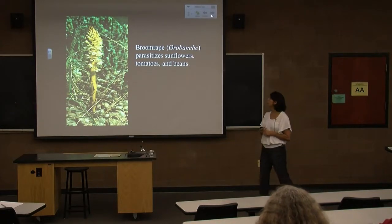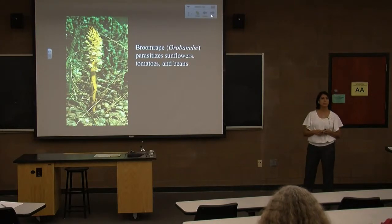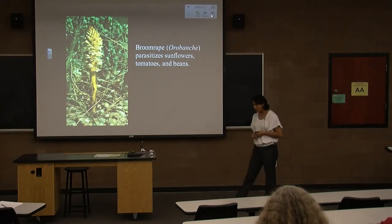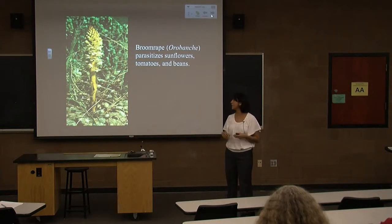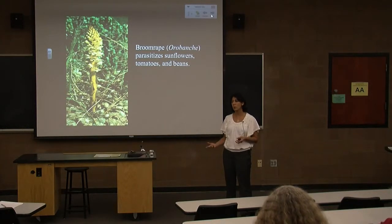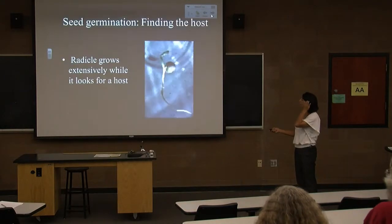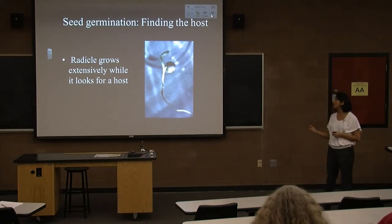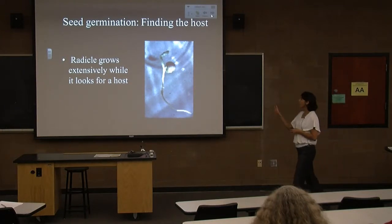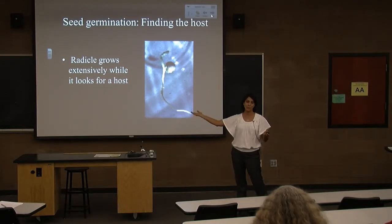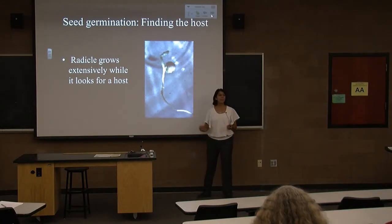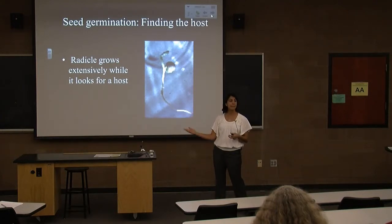Another obligate parasite that taps into both is broomrape, which parasitizes crop plants like sunflowers, tomatoes, and beans. For a regular plant, you just get your seed into the soil and the seedling grows. But if you're an obligate parasitic plant, you can't grow in the soil — you have to find a host. Parasitic plants employ different strategies: some just grow their radicle longer and longer hoping to run into a host, and if they don't, they die. These seeds tend to be larger, with more energy reserves.